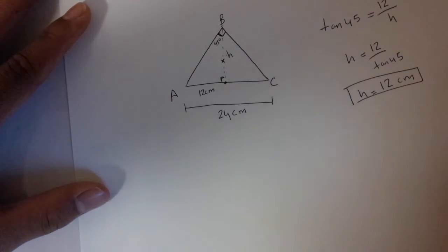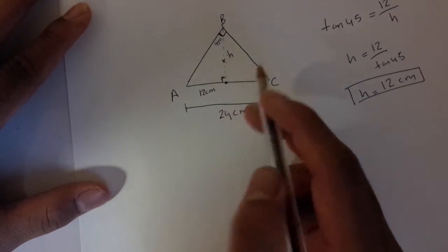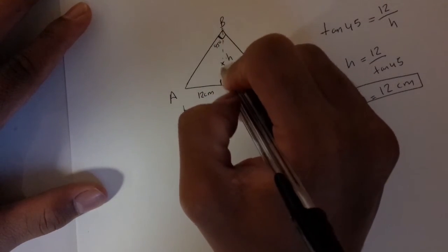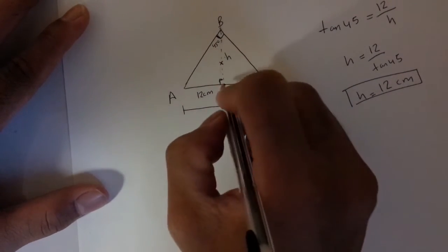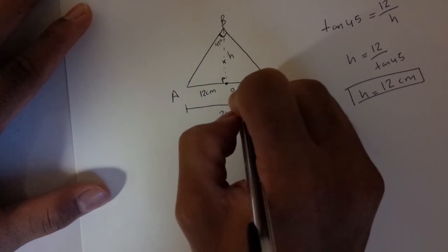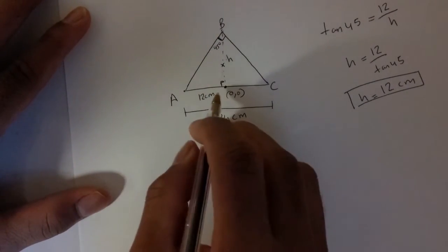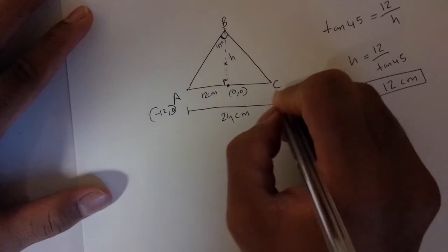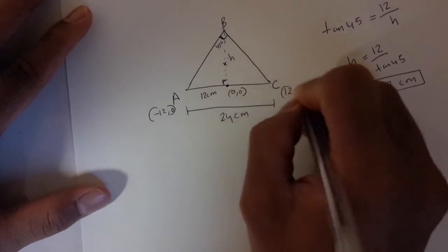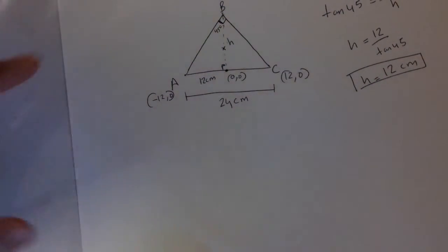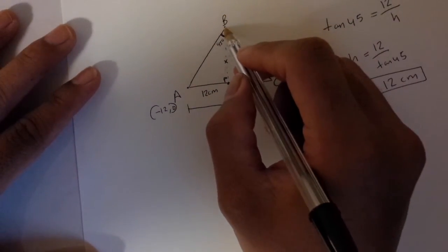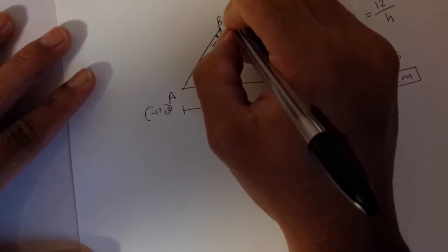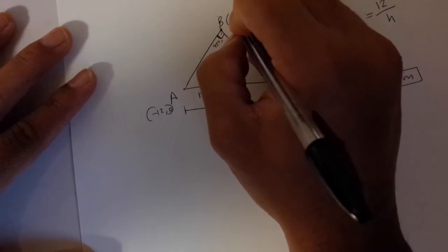Now to find the coordinates of the center of mass, the easiest way to do it is assume this in the coordinate system. Let's assume this as the origin 0, 0. So this point right here will be minus 12, 0 and this will be 12, 0. Total 24 centimeters. And since the height is 12 centimeters, the coordinates of point B will be 0, 12.